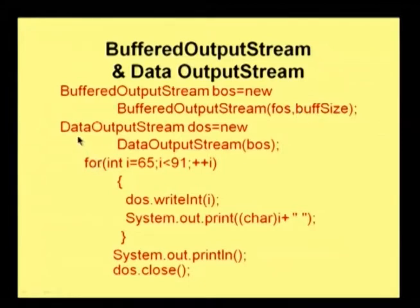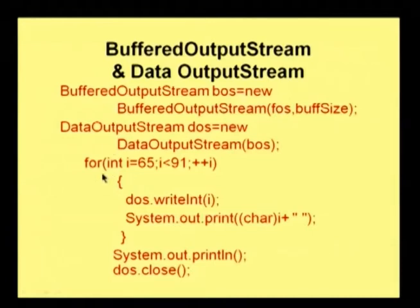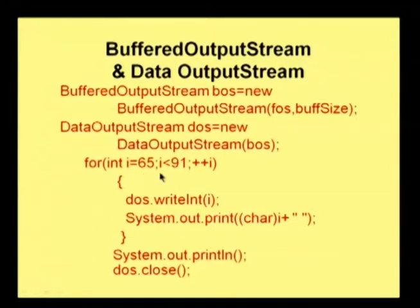Then we have a DataOutputStream, which in turn takes the BufferedOutputStream as a parameter. Whatever contents we write into the DataOutputStream will be written into the BufferedOutputStream, and then into the FileOutputStream. We write integer values from 65 to 91. These are ASCII values of characters, which will be type-casted into characters and printed. While writing into the DataOutputStream, they will be written in the form of integers.